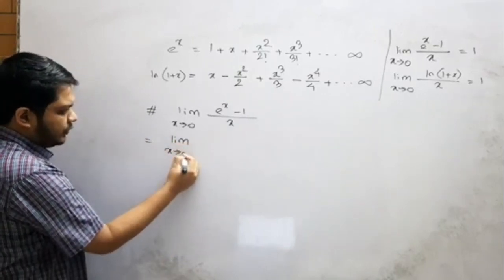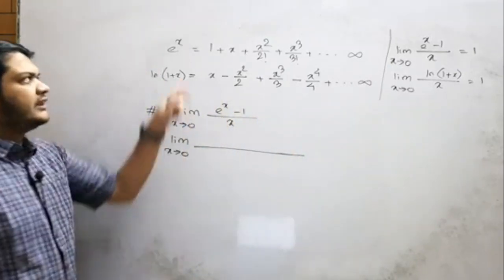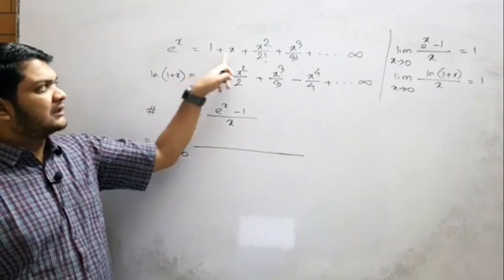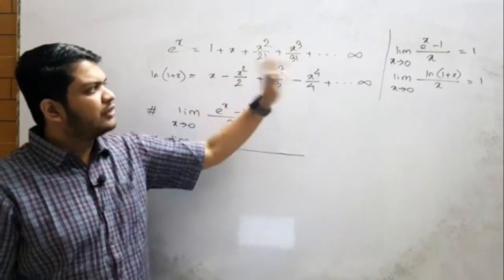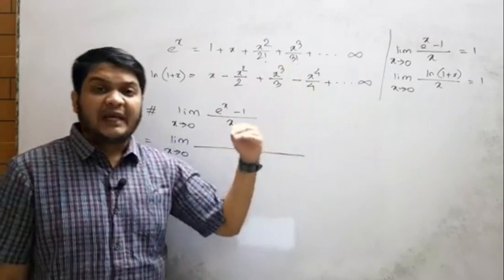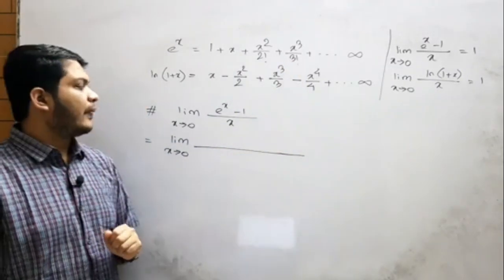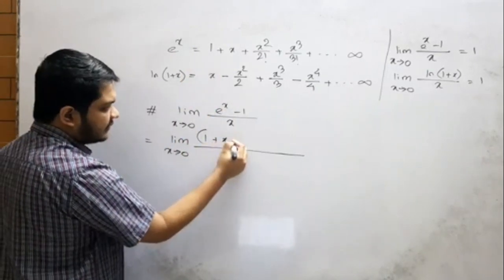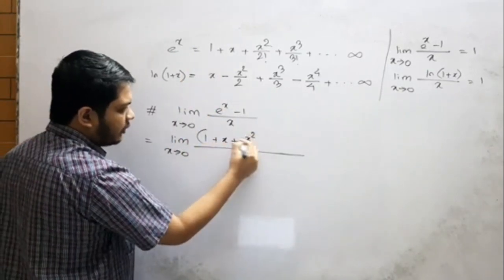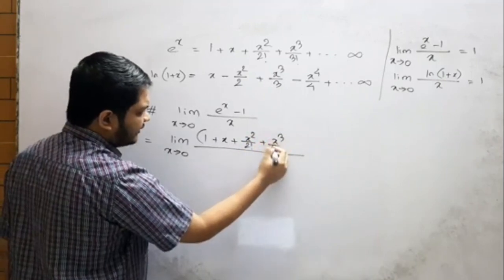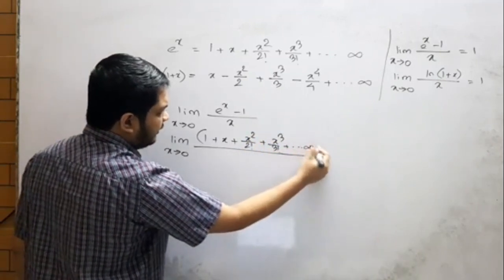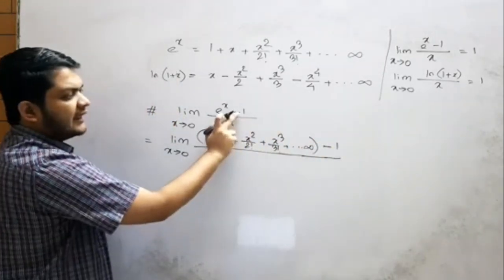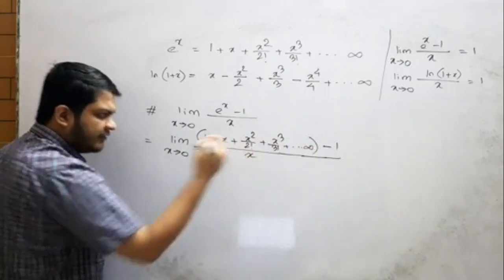Limit x tends to 0: e to the power x equals 1 plus x plus x squared by 2 factorial, plus x cubed by 3 factorial, plus x to the power 4 divided by 4 factorial, and so on to infinity. Then minus 1, divided by x.